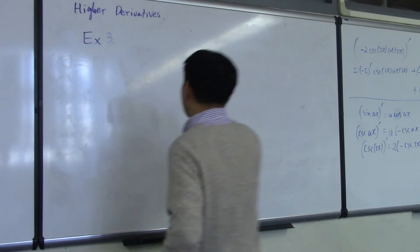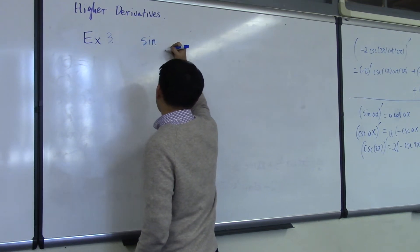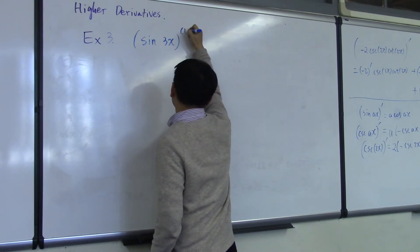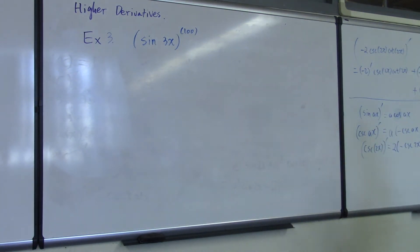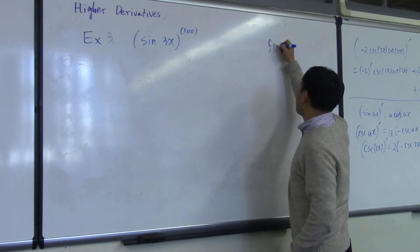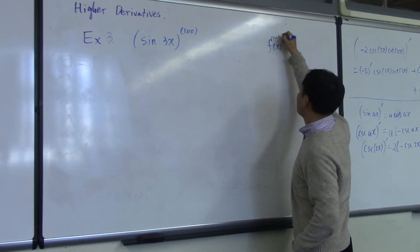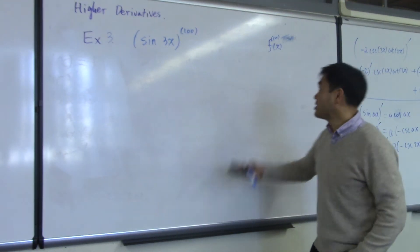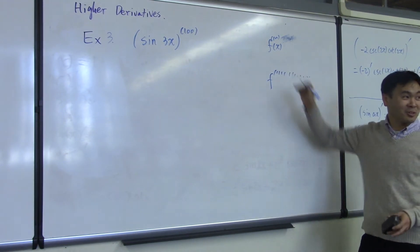The last one is kind of ambitious, especially if you want to solve it in five minutes: sine of 3x to the hundredth derivative. If you put a parenthesis with a number there, that means it's a derivative. So if you say f of x to the 100 like this, that means you're differentiating 100 times. And you don't want to be doing it 100 times, so you need a shortcut.